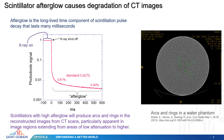Scintillator afterglow is a bad thing and it causes degradation in CT images. To define it, afterglow is the long-lived time component of the scintillation pulse decay that can last for many milliseconds. The plot here shows the scintillator photodiode signal versus time in milliseconds. The time from 0 to 100 milliseconds shows the diode signal when the x-ray beam is on. We normalize that to 1, and then when the x-ray beam is shut off at time 0, the scintillator continues to emit scintillation light, still putting out light at a rate of 0.61% of when the x-ray beam was on.